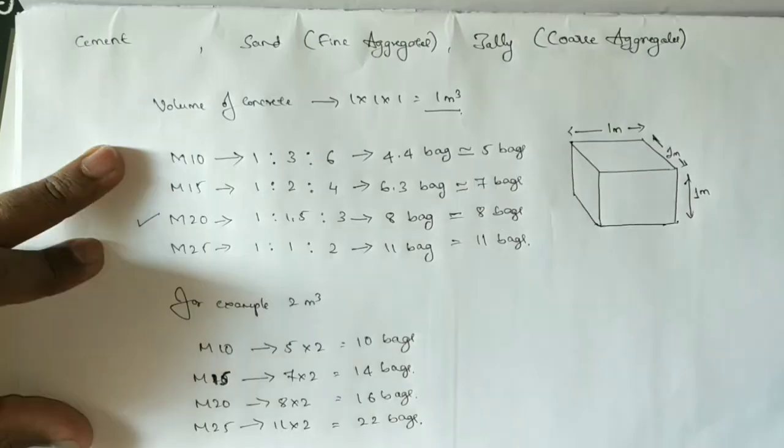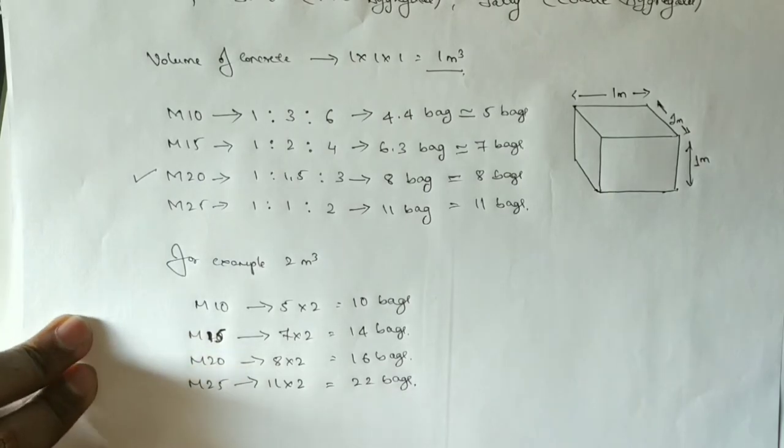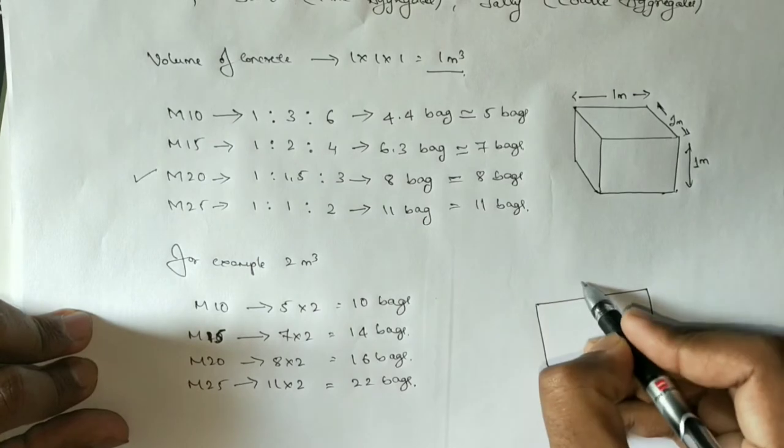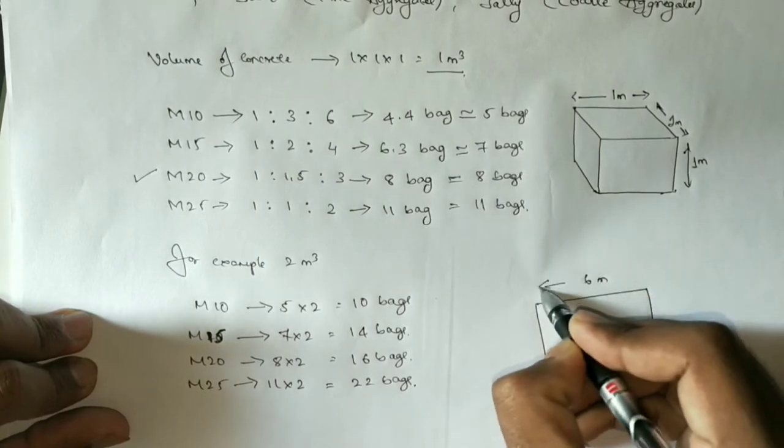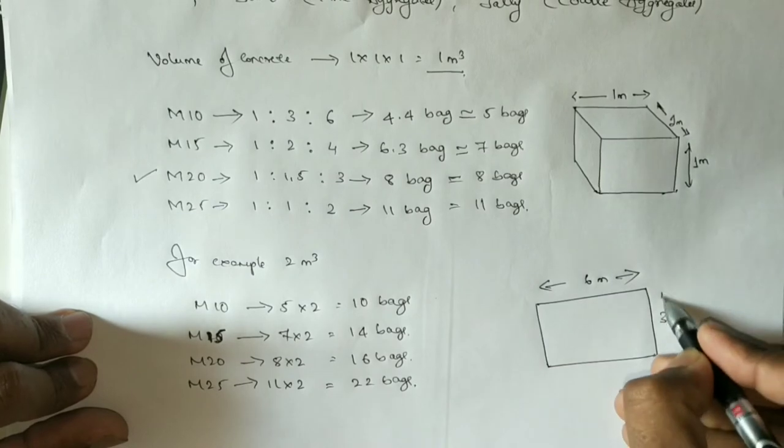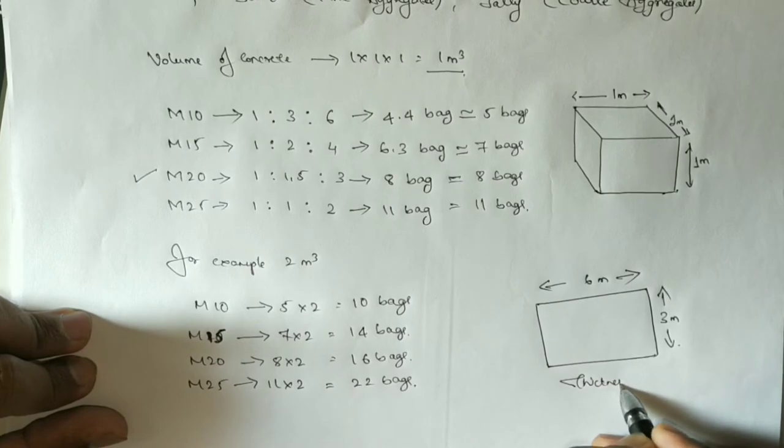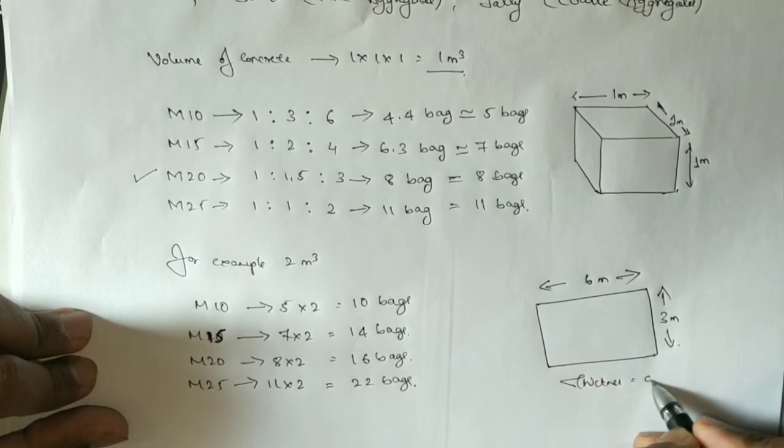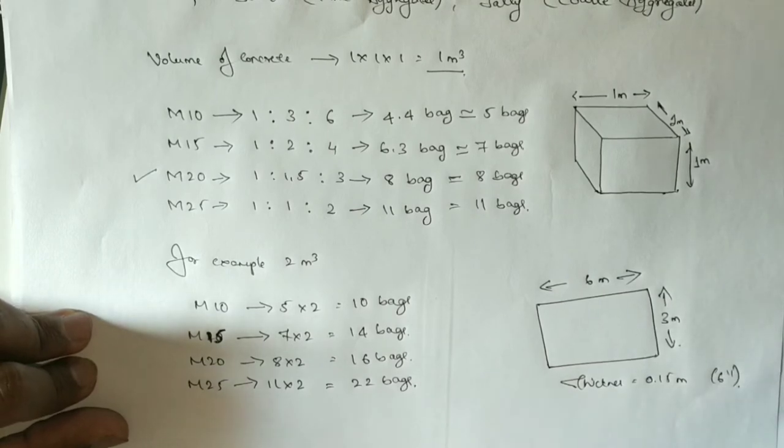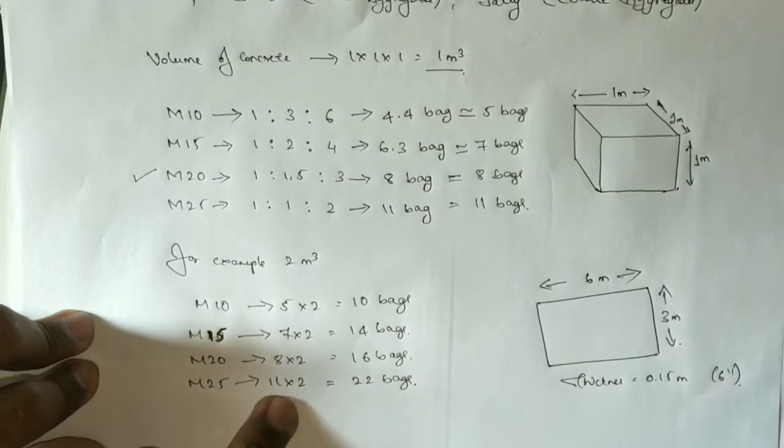For example, in this slab, the length is 6 meters, width is 3 meters, and thickness is 0.15 meters, which is almost 6 inches of concrete.